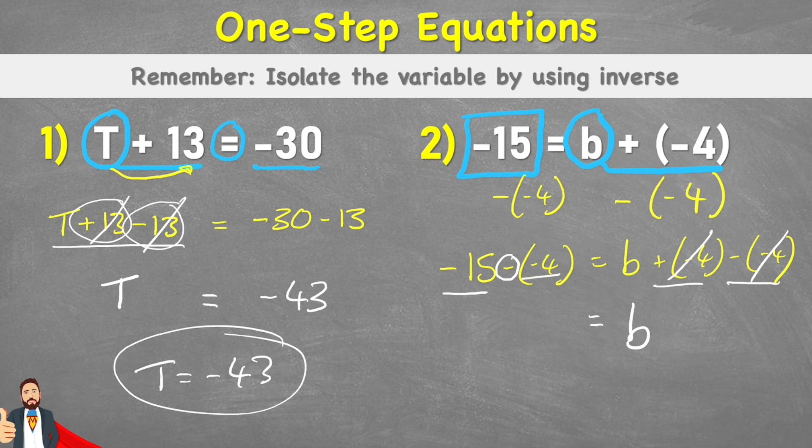So actually what we're doing is we're going to come up the number line. We're getting rid of some of that debt. So if we had negative 15 and we're getting rid of a negative 4, we actually come up and we end up at negative 11, a higher value than the negative 15. So negative 11 equals B, or in other words, B equals negative 11.